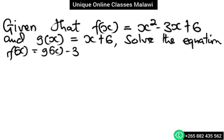The question is given that function of x is equal to x squared minus 3x plus 6, and function g of x is equal to x plus 6. We are asked to solve this equation where f(x) is equal to g(x) minus 3.